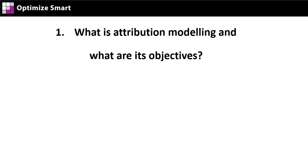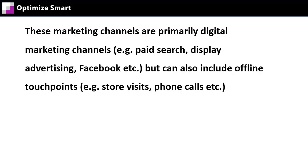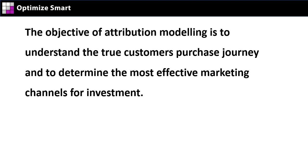What is attribution modeling and what are its objectives? Attribution modeling is the process of understanding and assigning credit to marketing channels that lead to sales and other conversions. These marketing channels are primarily digital marketing channels — for example, paid search, display advertising, Facebook, etc. — but can also include offline touch points like store visits, phone calls, etc. The objective of attribution modeling is to understand the true customer purchase journey and to determine the most effective marketing channels for investment.